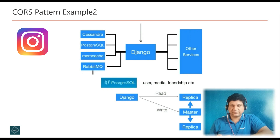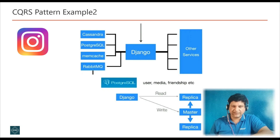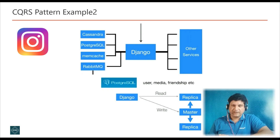Let's understand CQRS with another example: the Instagram media sharing platform. Instagram's database architecture is popular in microservices discussions. Instagram uses two database systems: a relational database — PostgreSQL — and a NoSQL database — Cassandra. Instagram uses Cassandra for user stories, which is read-intensive data, and PostgreSQL for user information and bio updates. This is one example of the CQRS approach.